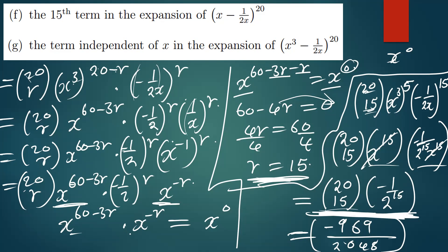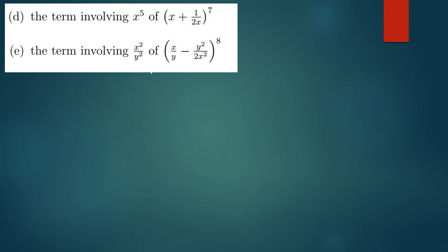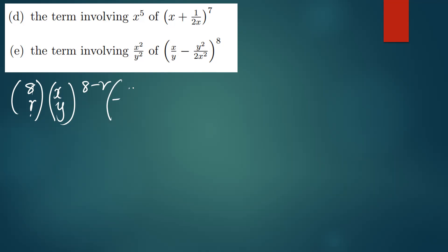Now let's do the last question — finding the term involving x squared and y squared. This is also simple using the same approach. Our n is 8, r is what we need to find, the value of a is x over y raised to the power 8 minus r, and the value of b is negative y squared over 2x squared, raised to the power r.